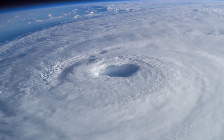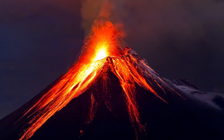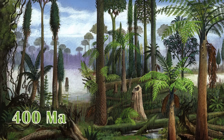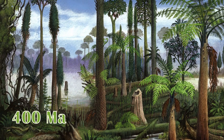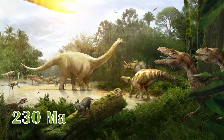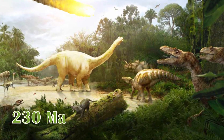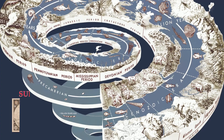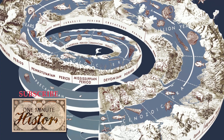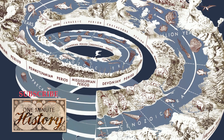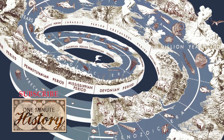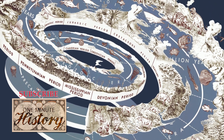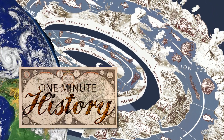Massive global events guided extinctions, evolution, and the arrival of land plants, mammals, dinosaurs, and hominids. Earth's history is so vast it is split into four eons, ten eras, twelve periods, and seven epochs.